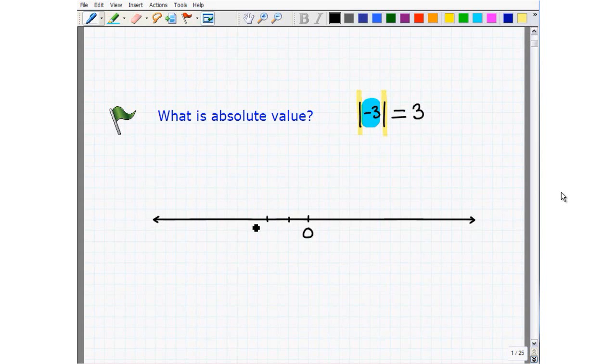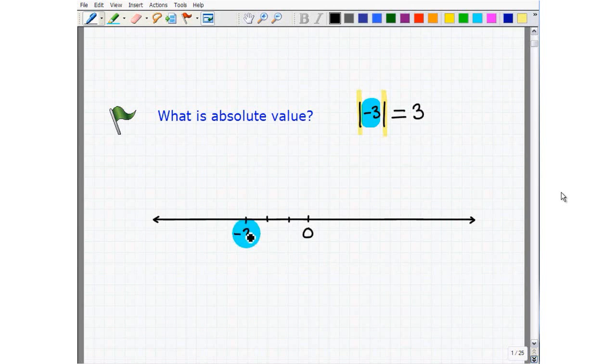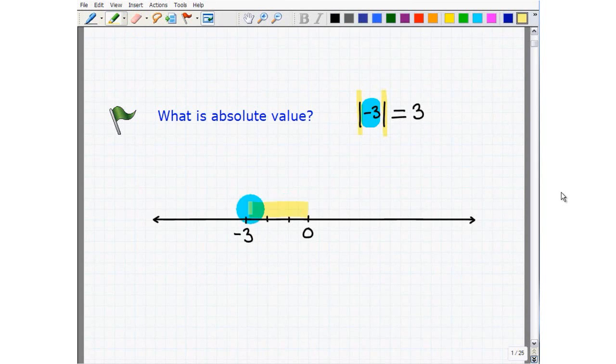Absolute value is measuring the distance a number is from zero. Let's go ahead and plot negative 3 on a number line. If I asked you, suppose this was hanging up on a wall somewhere, and I said take a tape measure and tell me how far zero is from negative 3, you went and took a tape measure and measured it, you would come back and tell me, in terms of whatever the integer values are on the number line, you would say it's three units away from zero.